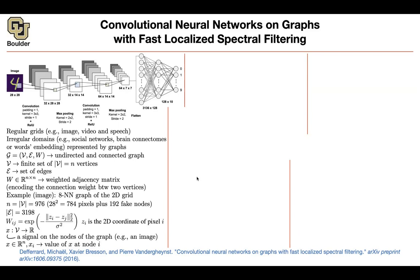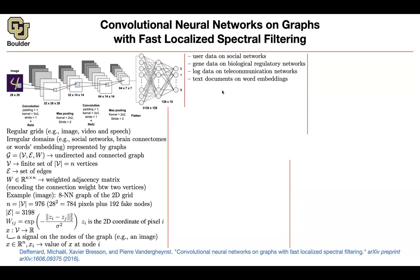Now we want to do convolution. I introduced this concept in a framework you know about — images — and you can turn images into graphs, but then you can extend this beyond images. You can go to social networks, gene data and biological networks, telecommunication networks like 5G, text documents for word embeddings, etc. What we want to do is introduce convolution.